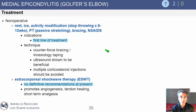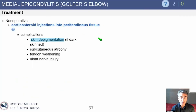Nonoperative treatment is of course the first-line treatment — what applies to the lateral side applies here too, including bracing and cortisone injections. However, you must be very careful with cortisone injections in this area because of nearby nerves. Complications of a cortisone injection include skin depigmentation and subcutaneous atrophy, which can be dramatic especially in a young thin patient. It can also cause tendon weakening, and the ulnar nerve — especially if it's subluxing and not located in the cubital tunnel — can be injured by an injection. I have seen this complication myself.